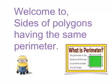Welcome to Sides of a Polygon Having the Same Perimeter. The perimeter is the distance all the way around the outside of a 2D shape.